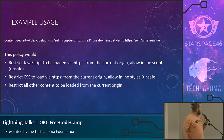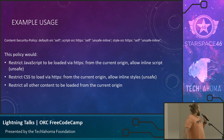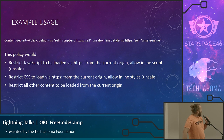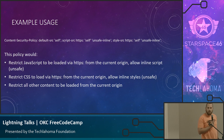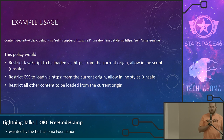This policy restricts JavaScript to be loaded via HTTPS from the current origin and it allows unsafe inline scripts to be run. It also restricts CSS to load via HTTPS from the current origin and allows for inline styles. It also restricts all other content to be loaded from the current origin. The HTTPS keyword specifies that it must be loaded over HTTPS — it won't upgrade those requests. So if you specify an HTTP resource anywhere in your document, it's going to throw an error and block it.